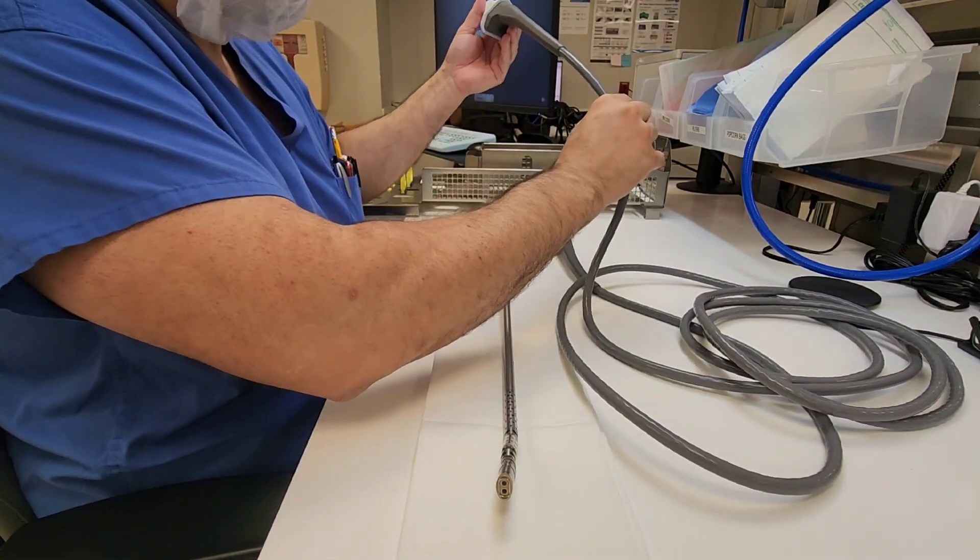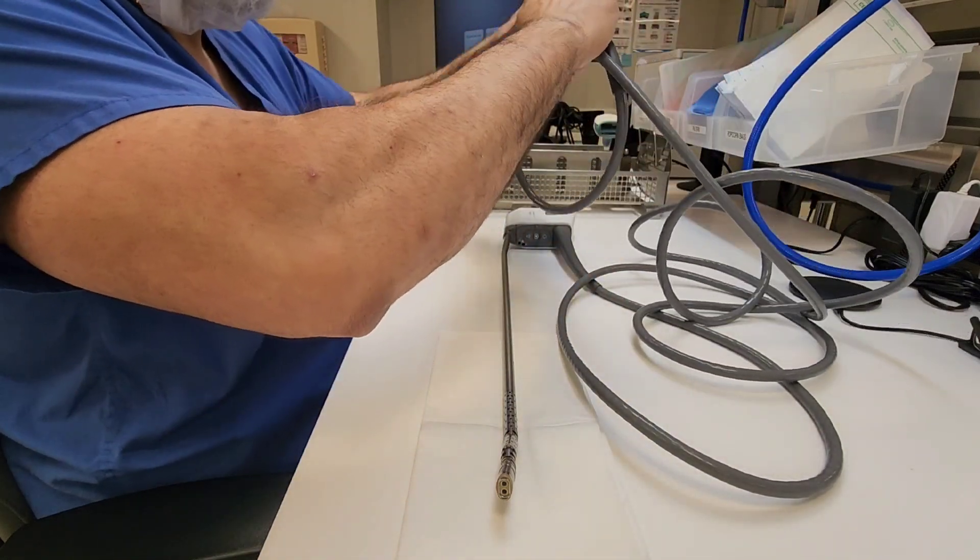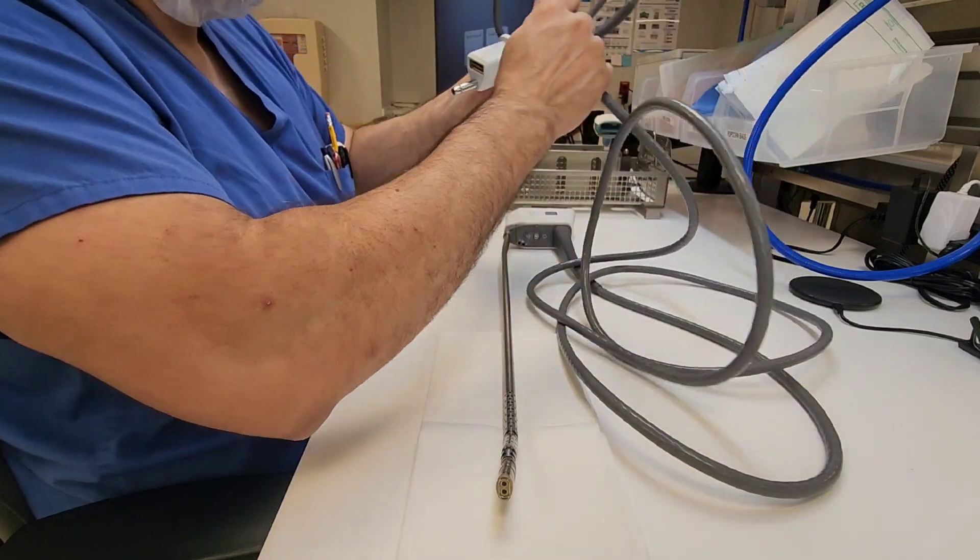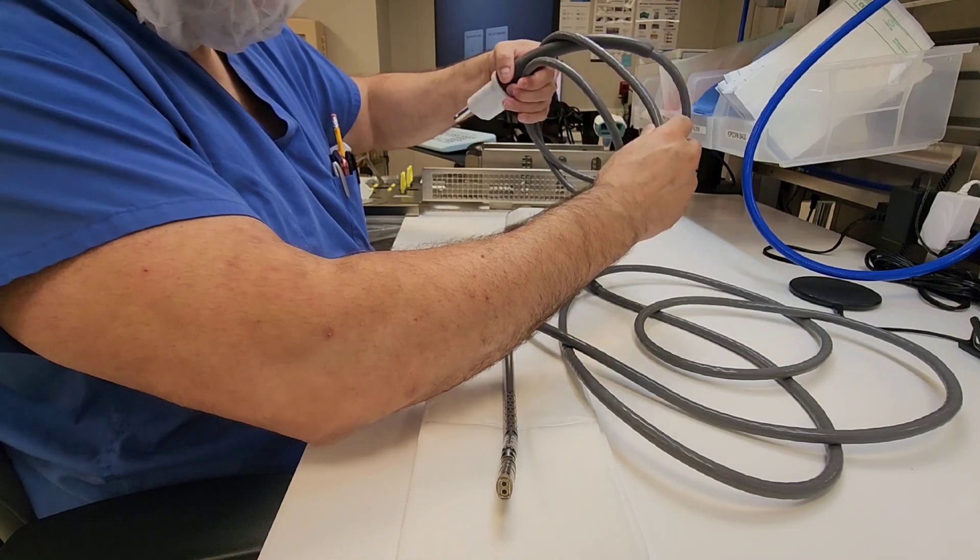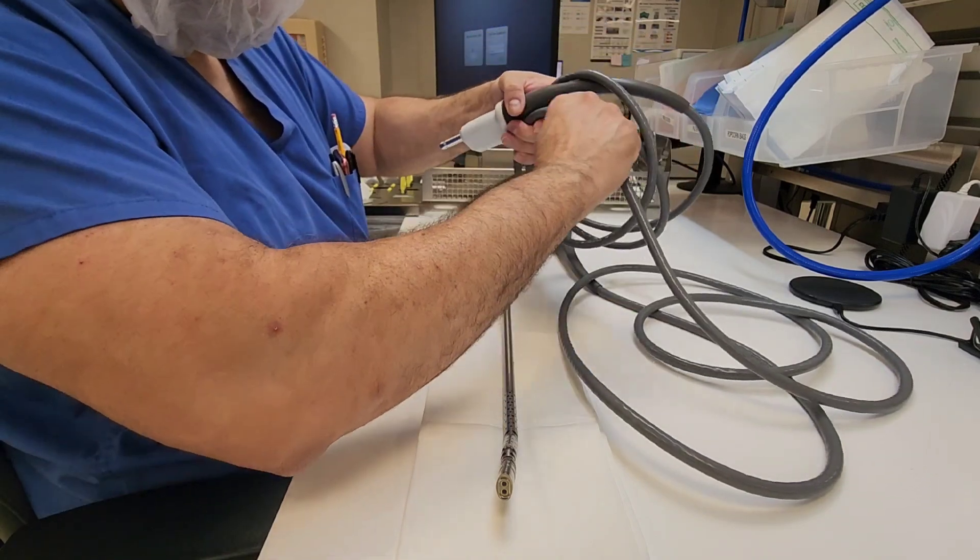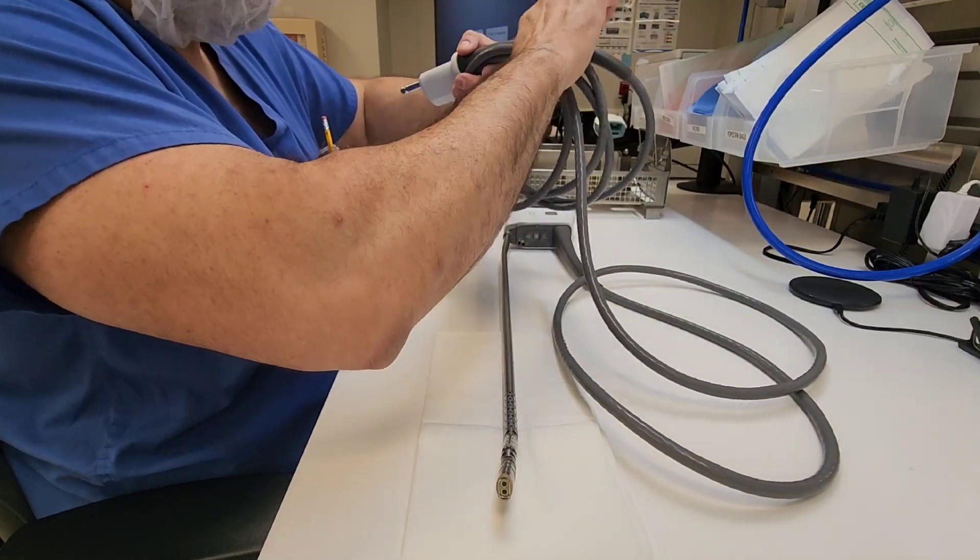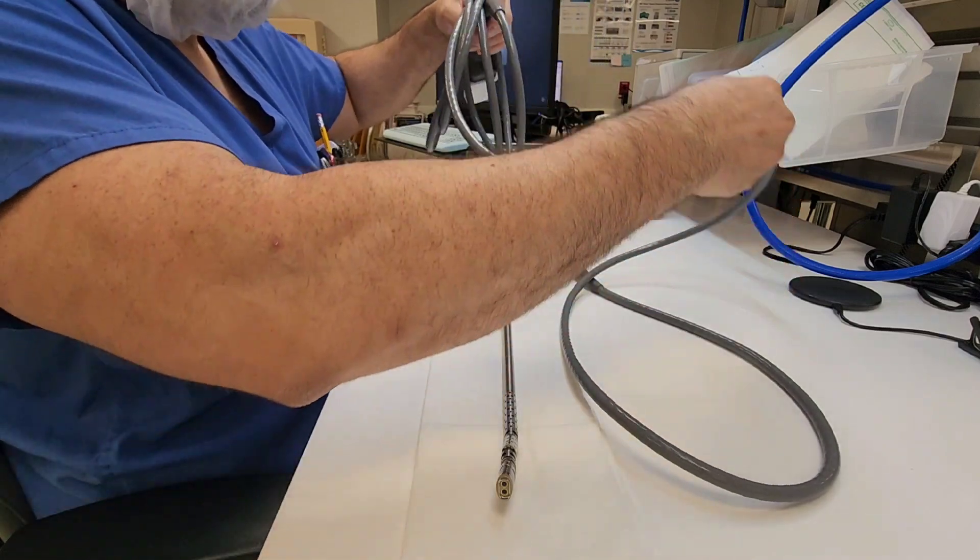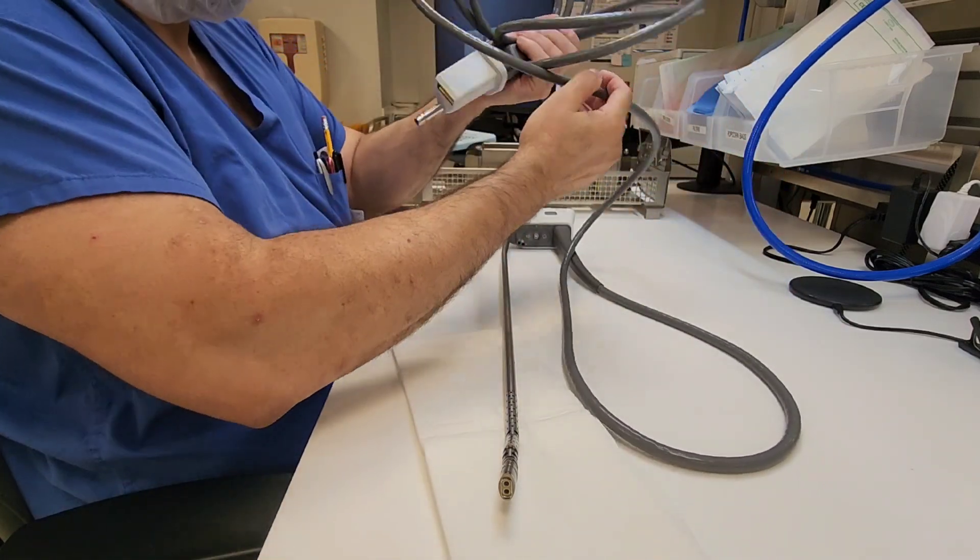The distal tip is inspected for any cracks or any kind of loose components that should not feel loose. After you've inspected and run your hand down that cord, you want to be neat about it and roll that cord up so that you don't have it interfering with the next steps of your process.